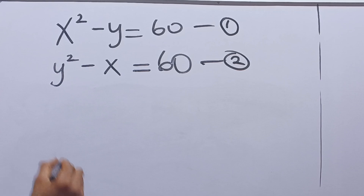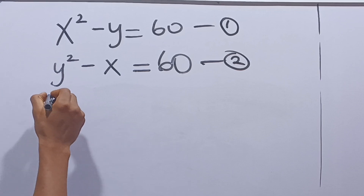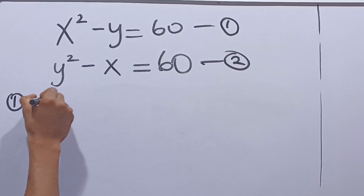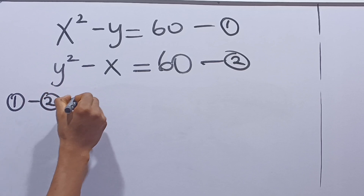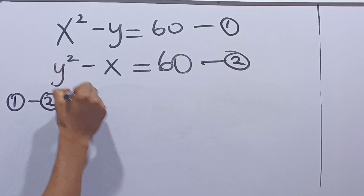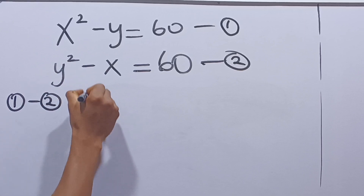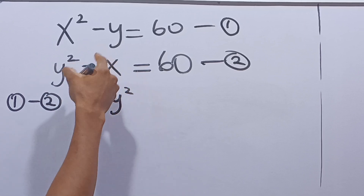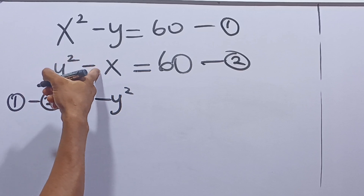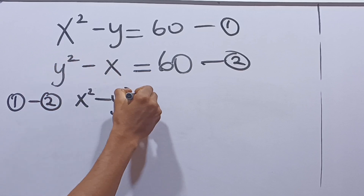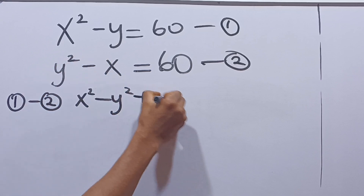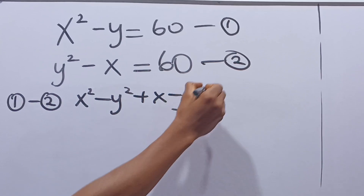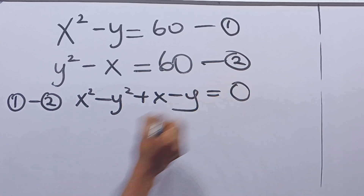The first thing I do here is to say that equation 1 minus equation 2 will give me x squared minus y squared. This is minus minus x, which is plus x, minus y. And this is equal to 60 minus 60, which is 0.